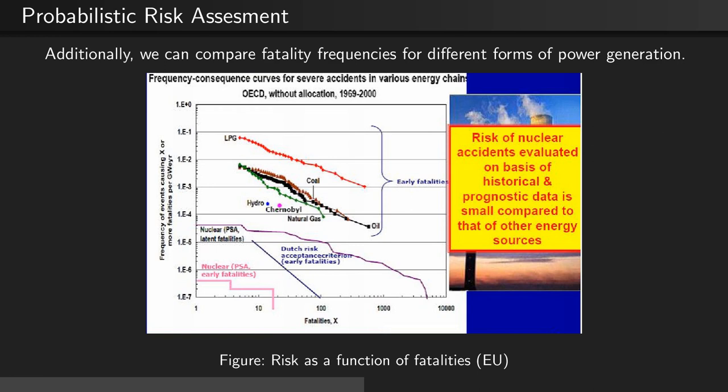Additionally, we can compare fatality frequencies for different forms of power generation. As is seen in this figure, nuclear power fatalities are significantly lower than fatalities from other forms of power generation.